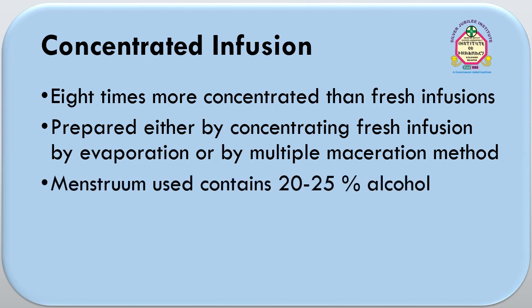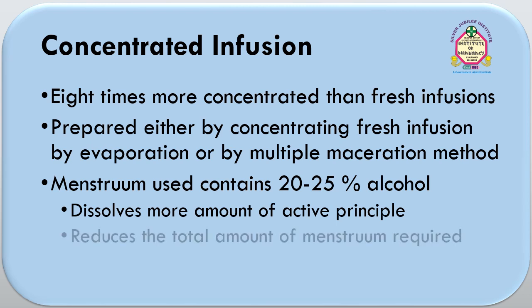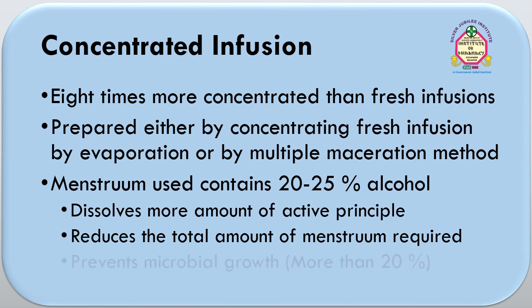The menstruum used for the preparation of concentrated infusion should contain 20 to 25% alcohol, as it has some advantages: it dissolves more amount of active principles from the crude drug, it reduces the total amount of menstruum required for extraction, and as it is present at more than 20%, it prevents microbial growth in the preparation. So, to preserve this preparation for a longer duration, alcohol should be present in the menstruum.